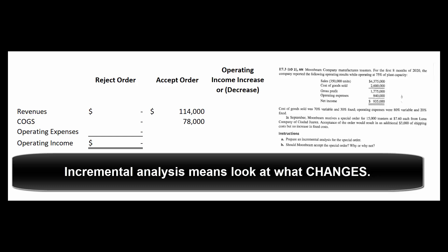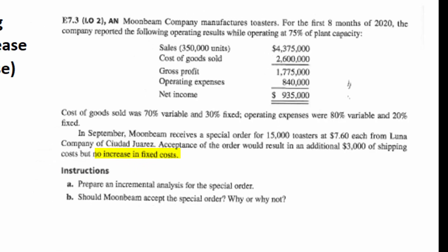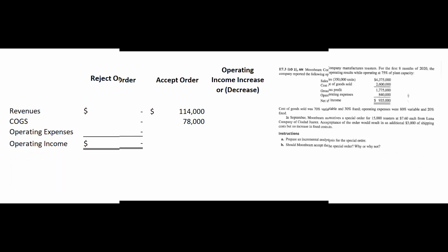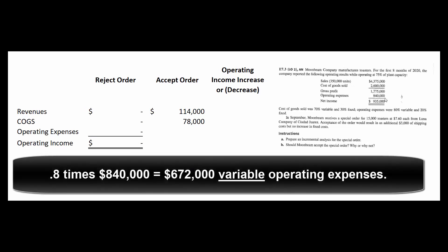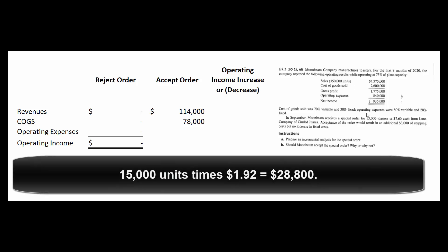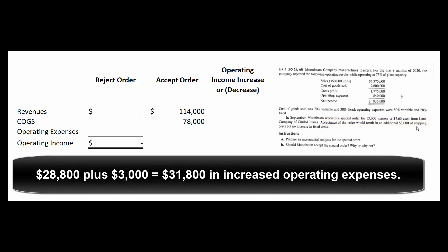Remember, we're looking at what changes — that's what incremental analysis is all about. There's no change in fixed costs; only the variable portion of cost of goods sold goes up by $78,000. For operating expenses: 80% of $840,000 is $672,000 variable, which divided by 350,000 units gives $1.92 variable operating expenses per unit. For 15,000 units that's $28,800, plus the extra $3,000 in shipping, giving us $31,800 in variable operating expenses.